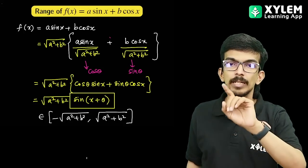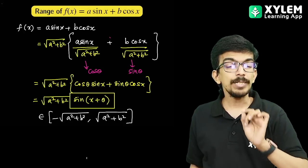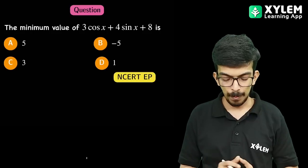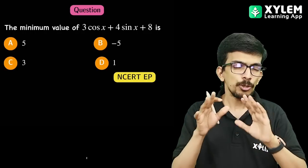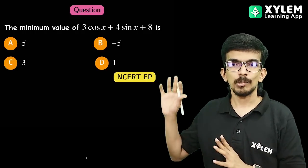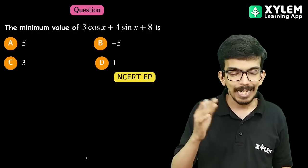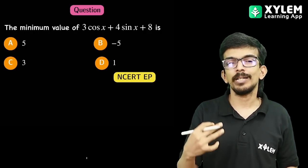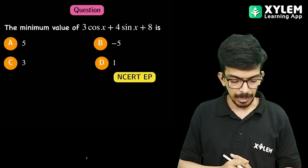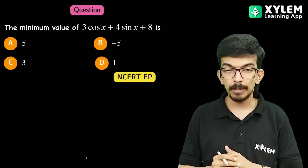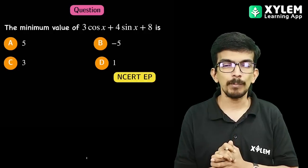We will talk about questions. The question on screen is: what is the minimum value of 3 cos x plus 4 sin x plus 8? This is an NCERT example problem. Please try to answer it.